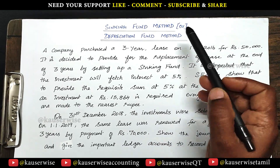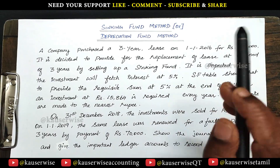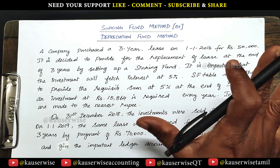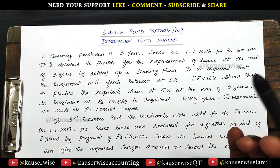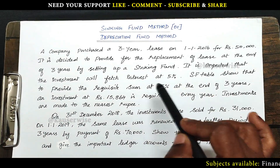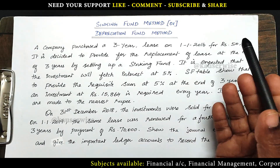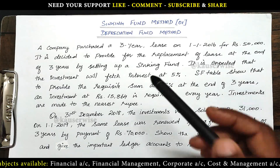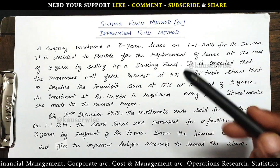Before we see the problem, let us try to understand what is sinking fund method. Under this method, the amount of depreciation is calculated every year with reference to the sinking fund table. That amount is debited to depreciation account and credited to sinking fund account. At the end of each and every year, the amount of depreciation is charged to profit and loss account and the equal amount will be invested in outside securities in order to earn compound interest on investment.